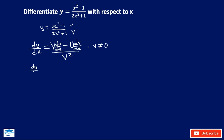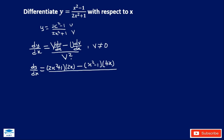So dy/dx is equal to: v is 2x squared plus 1, multiplied by du/dx — we differentiate the numerator which is 2x — minus u, where u is x squared minus 1, times dv/dx — we differentiate the denominator which is 4x. All over v squared, where v is 2x squared plus 1, so we have 2x squared plus 1, squared.